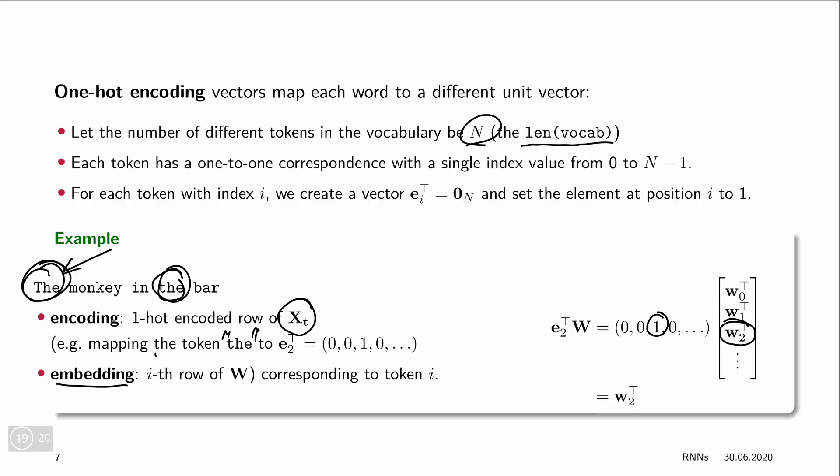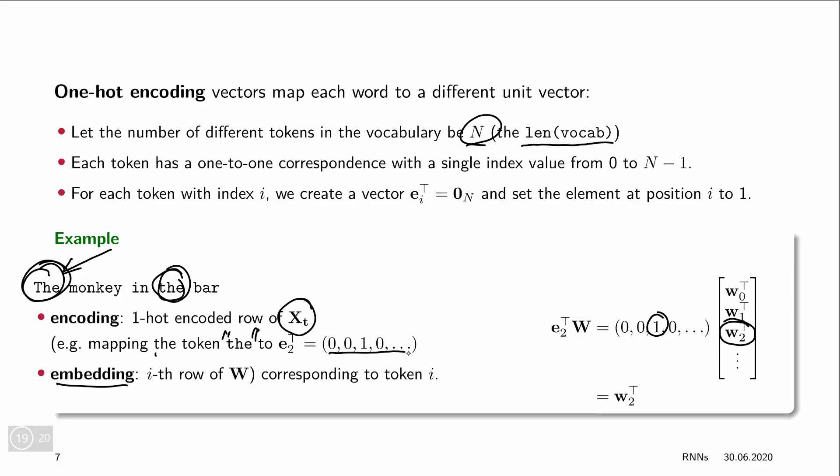This means that each row of the weight matrix W is only used when its corresponding word appears as input. For this reason, we can interpret each row of W as an embedding of the corresponding word — a continuous vector in R. There is thus a separation between the encoding, which is a binary indicator of which word appears, and the embedding, which is a continuous vector representation of that word.